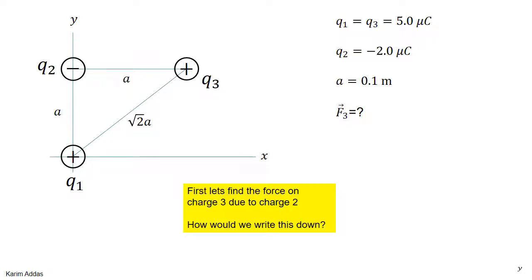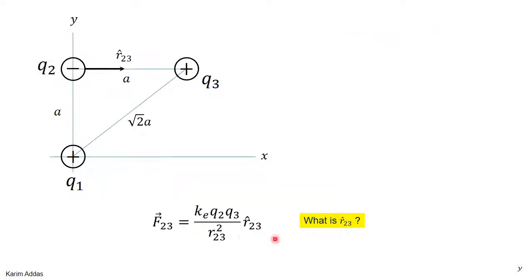So first, we know that to get the total force on a charge, you have to get the force due to charge 1 and due to charge 2. Let's get the force on 3 due to 2. How would you write that down in a very formal way? Well, we write down that the force on 3 due to 2 is Ke Q2 Q3 over the distance squared R hat 2,3, where R hat 2,3 is a vector that points from 2 to 3. It's a unit vector. So what is R hat 2,3 in this particular problem? What is the unit vector that points from charge 2 to charge 3 in this particular geometry?